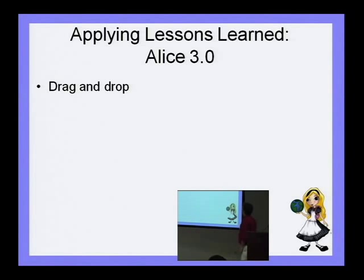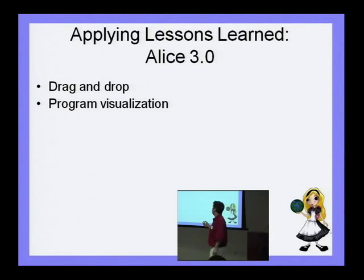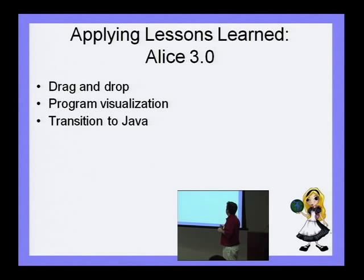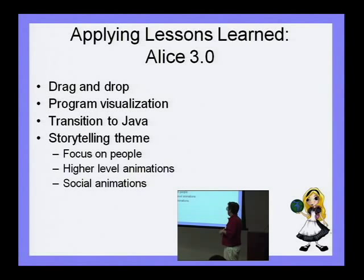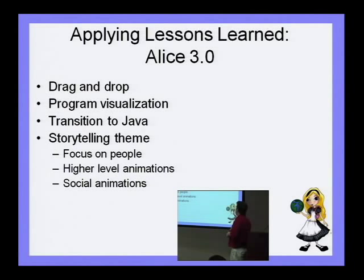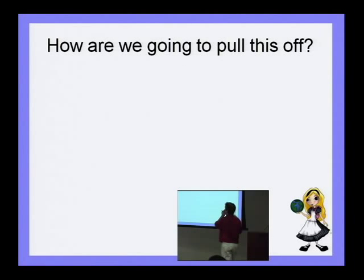So what are we going to do? We're going to apply all the lessons we've learned and build ALICE 3. We're going to keep the drag-and-drop to prevent syntax errors, keep the program visualization, have a transition to Java so people can seamlessly move on, and provide the storytelling theme with people-centric higher-level social animations so kids can make characters in their own image.